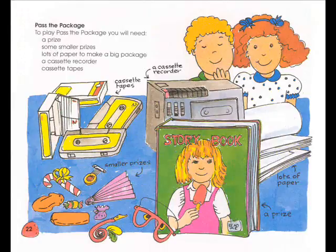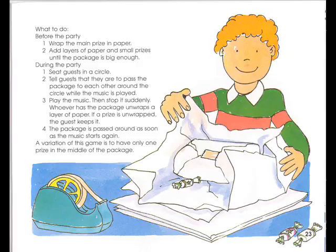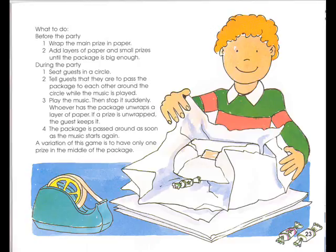Pass the Package: To play you will need a prize, some smaller prizes, lots of paper to make a big package, a cassette recorder, and cassette tapes. Before the party: 1. Wrap the main prize in paper. 2. Add layers of paper and smaller prizes until the package is big enough. During the party: 1. Seat the guests in a circle. 2. Tell guests to pass the package around the circle while the music is playing. 3. Play the music, then suddenly stop it — whoever has the package unwraps a layer of paper. If the prize is unwrapped, the guest gets to keep it. 4. The package is passed around again as soon as the music starts. A variation is to have only one prize in the middle of the package.